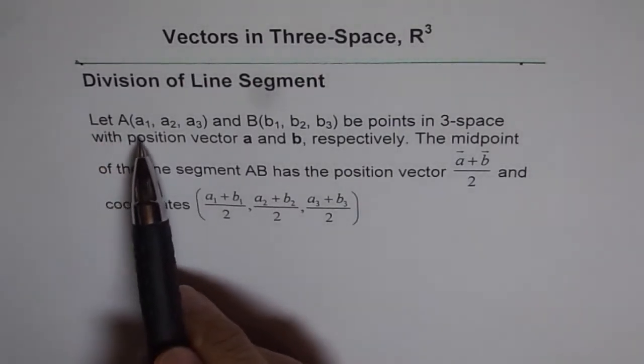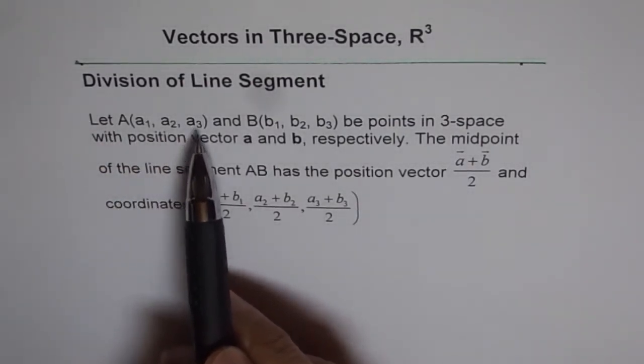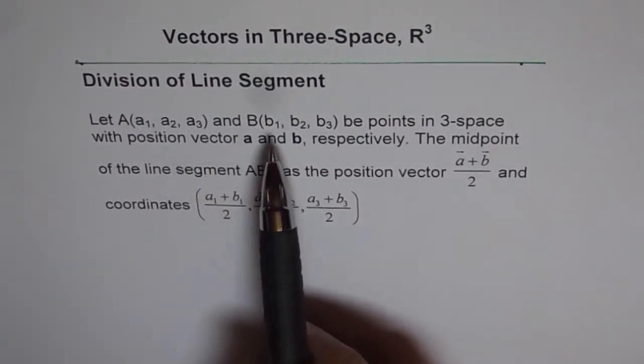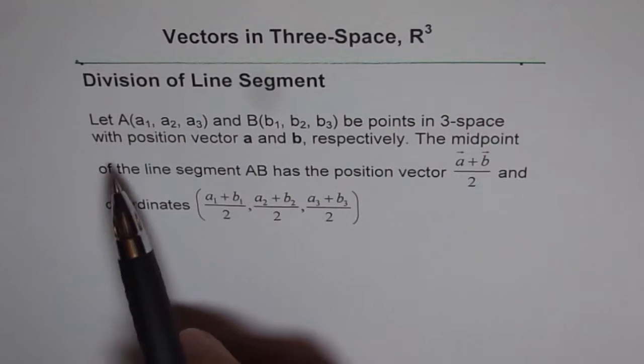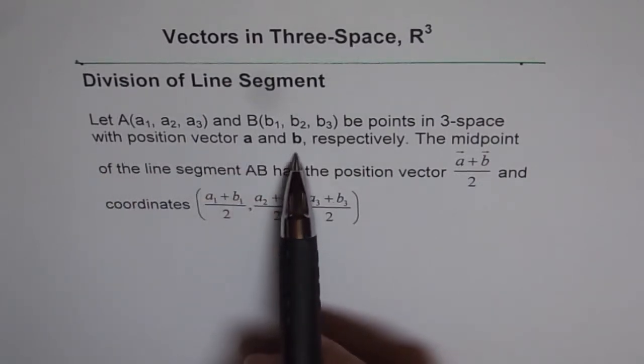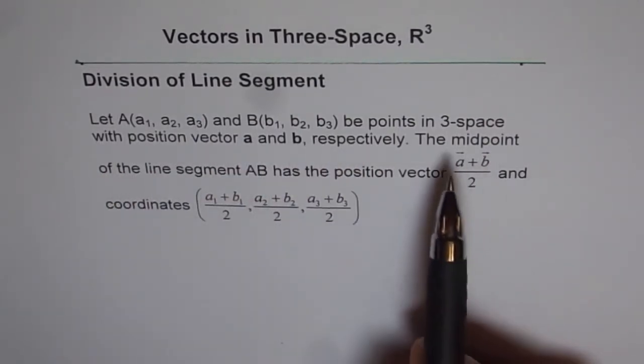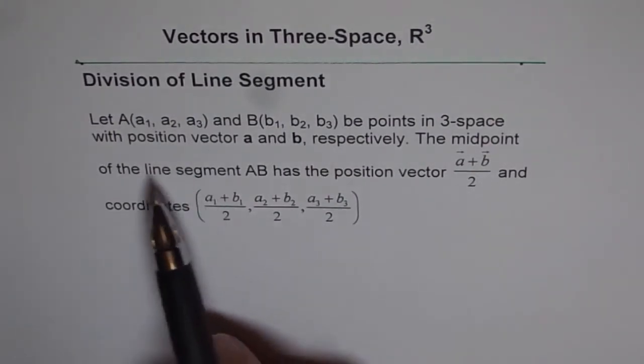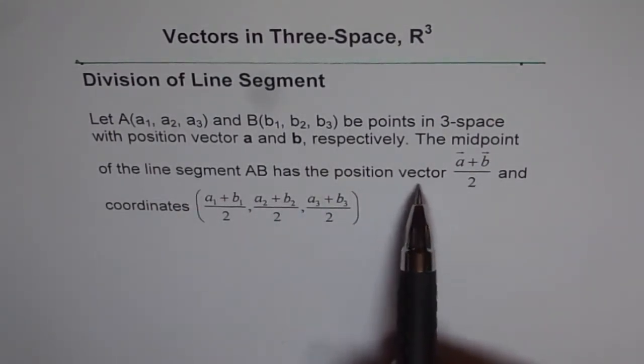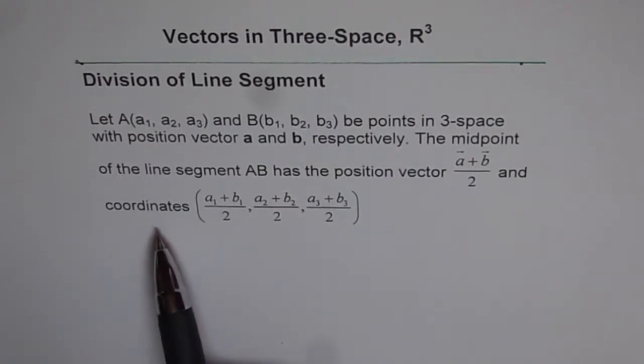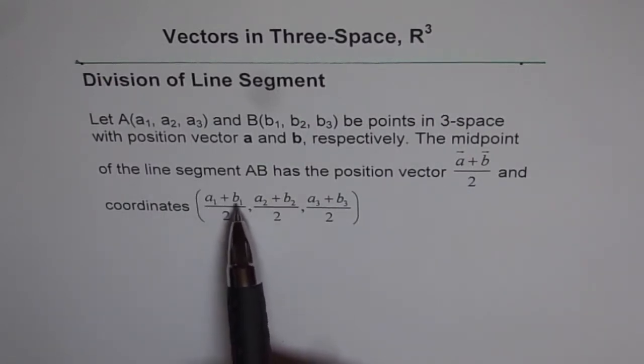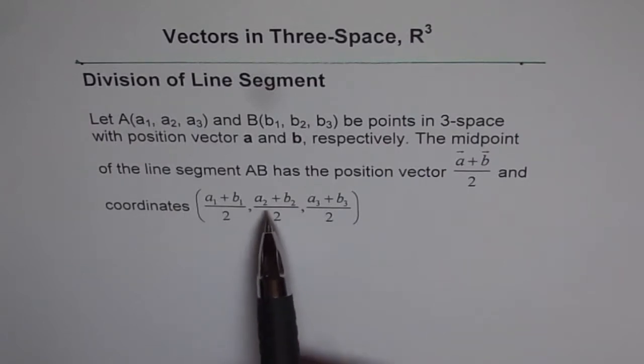Let A with coordinate points A1, A2, A3 and B with coordinate points B1, B2, B3 be points in 3-space with position vector A and B respectively. The midpoint of the line segment AB has the position vector A plus B by 2 and the coordinate points are A1 plus B1 divided by 2, A2 plus B2 divided by 2, and A3 plus B3 divided by 2.